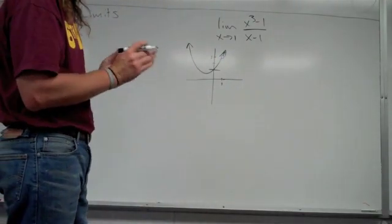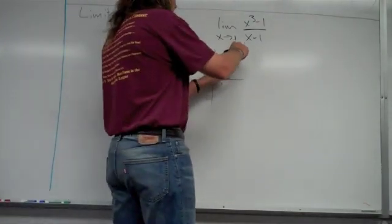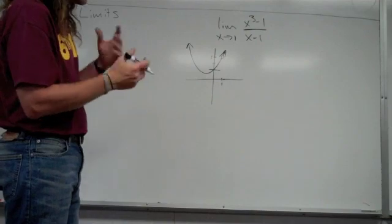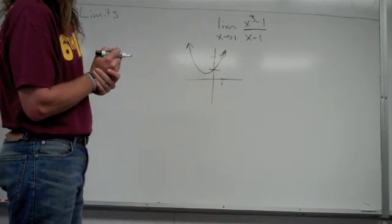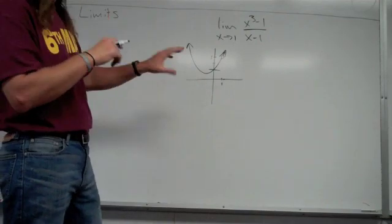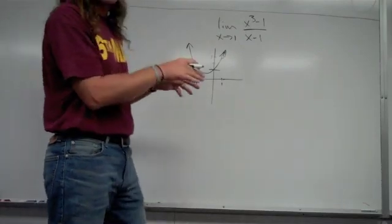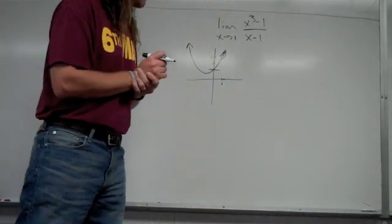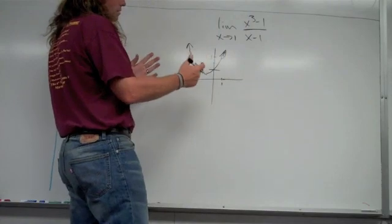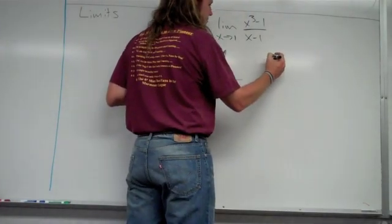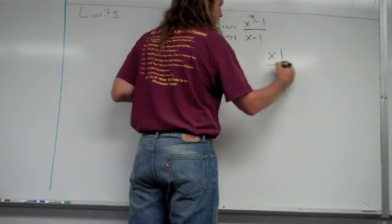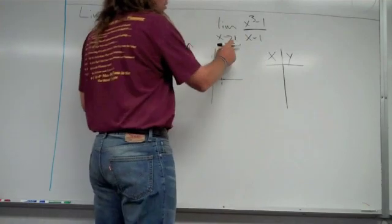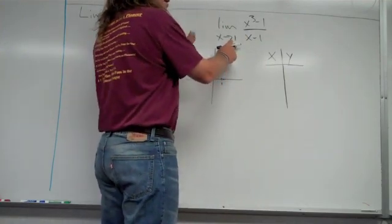So this is looking at it graphically. Now we're going to look at it with a table — numerically. I'd recommend using a graphing calculator. I want to make a chart of x and y values and approach x equals 1 from the left-hand side and the right-hand side.